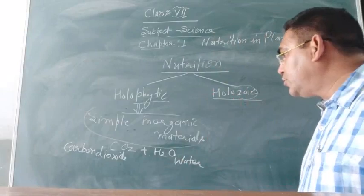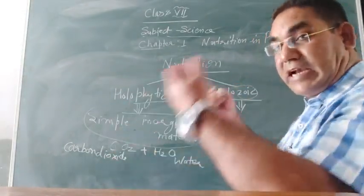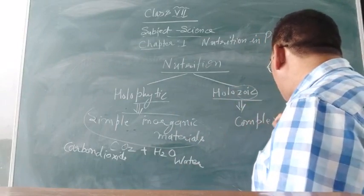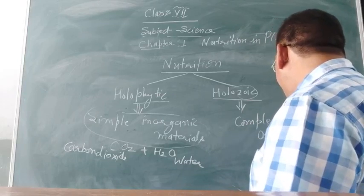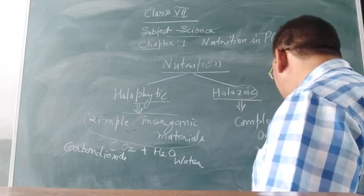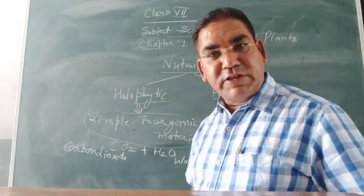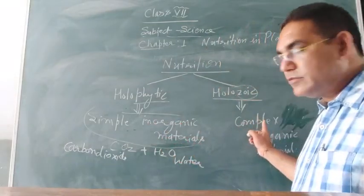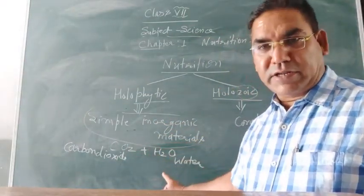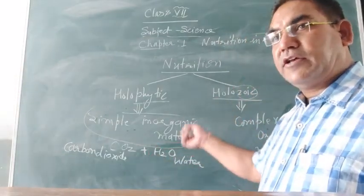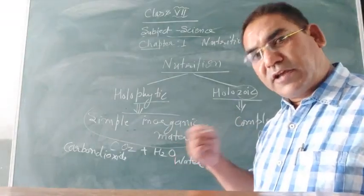In the case of holozoic nutrition, they obtain their food from complex organic materials — complex organic compounds. So in holozoic nutrition, organisms obtain their food from complex organic compounds.